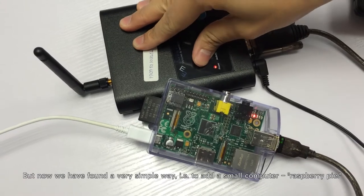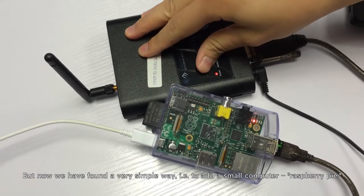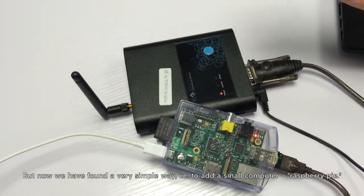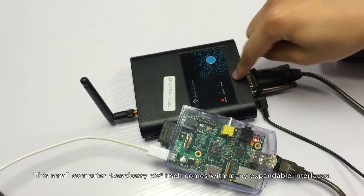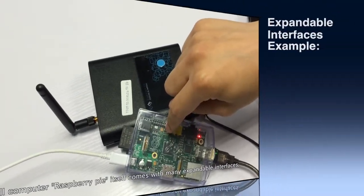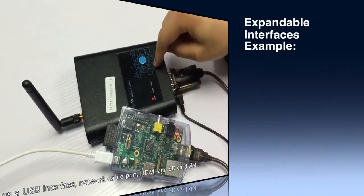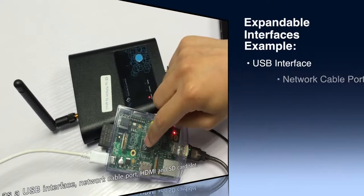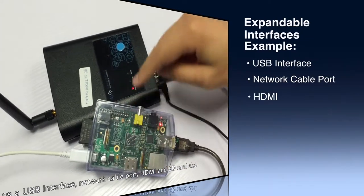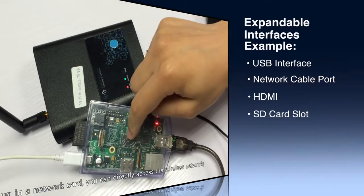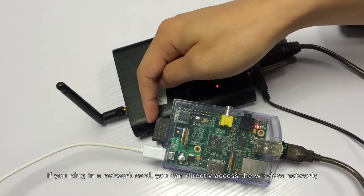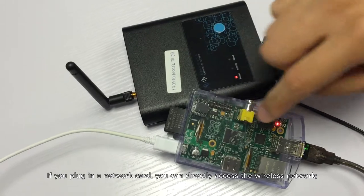But now, we have found a very simple way: add a small computer, the Raspberry Pi. This small computer comes with many expandable interfaces, such as a USB interface, network cable port, HDMI, and SD card slot. If you plug in a network card, you can directly access the wireless network.